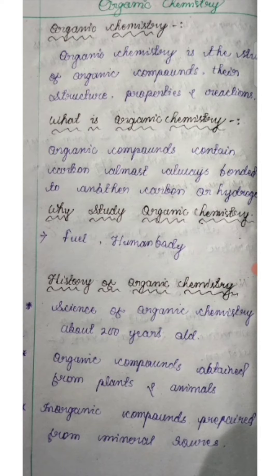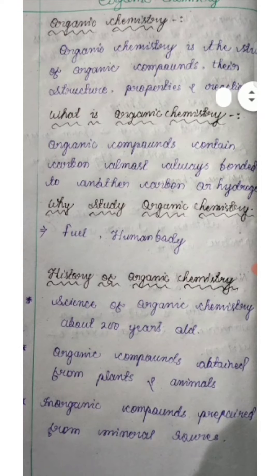So, organic chemistry is the same as carbon. Organic compounds are carbon most of them. Carbon and carbon are bonding and hydrogen are bonding.